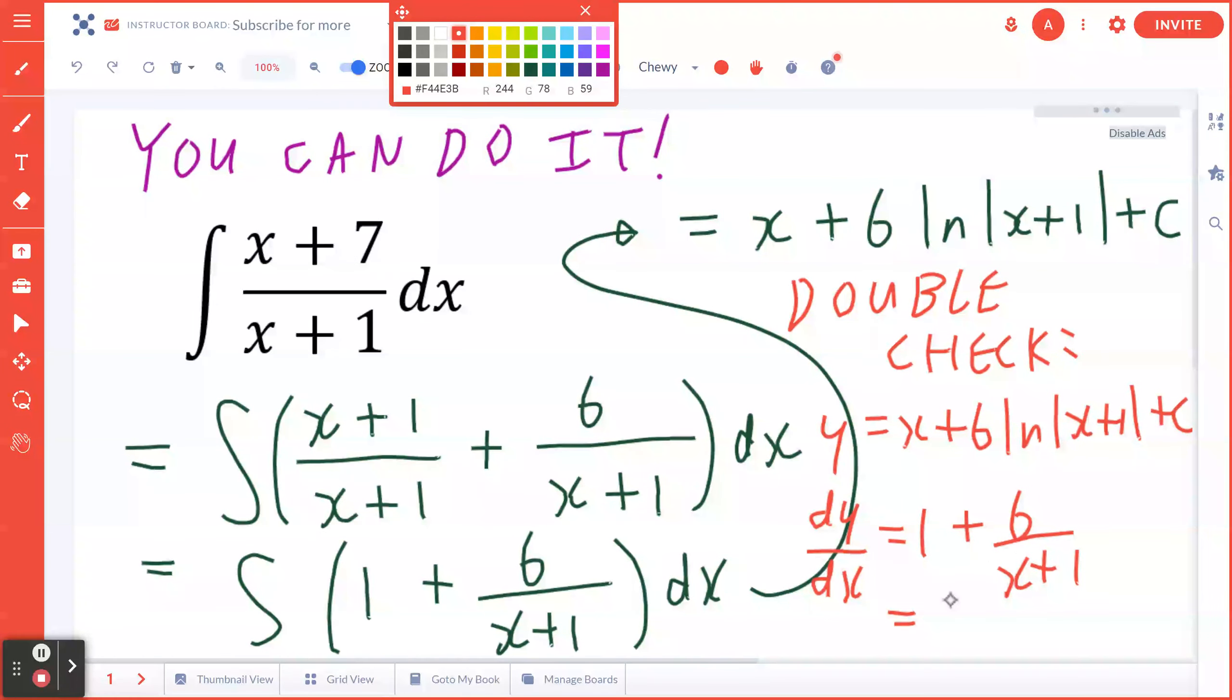This will be exactly (x+1)/(x+1) plus 6/(x+1), which will give you (x+7)/(x+1) as expected. I hope this makes sense.